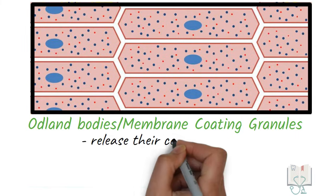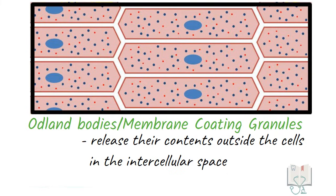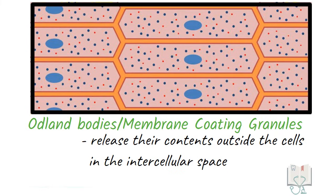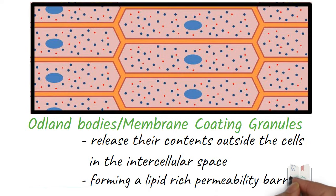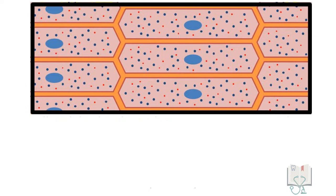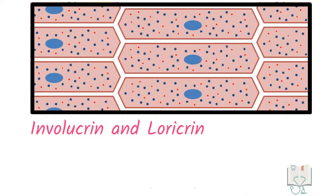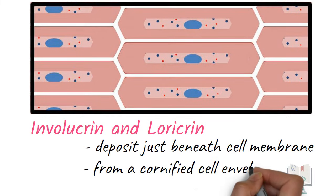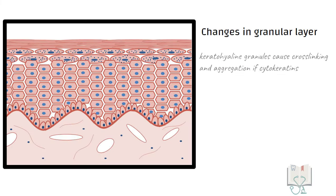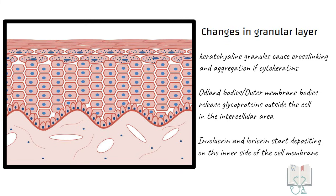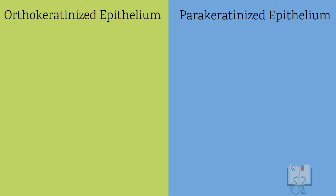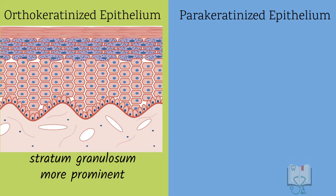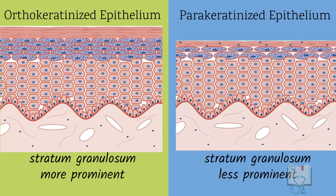Other than keratohyalin granules, there are odland bodies or membrane coating granules. These granules are not proteins but glycolipids, and they release their contents outside the cells into the intercellular space, helping to form a lipid-rich permeability barrier that limits movement of aqueous substances through the intercellular spaces. Additionally, proteins like involucrin and loricrin start depositing just beneath the cell membranes to form a cornified cell envelope, which provides high mechanical resistance. All these changes in the granular layer transform the keratinocyte into a mechanically resistant top layer. The granular layer is more prominent in orthokeratinized epithelium than in parakeratinized epithelium, leading to a higher extent of keratinization in orthokeratinized epithelium.